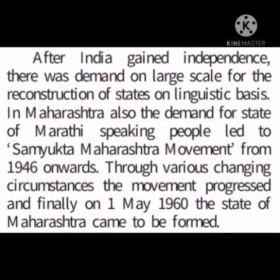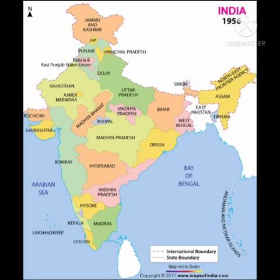We will study how this movement progressed and finally the state of Maharashtra came to be formed on 1st May 1960. See this map of India of 1956 — can you see Maharashtra state? No, because before 1st May 1960 there was no separate state for Marathi speaking people. In place of Gujarat and Maharashtra, you can see Bombay state — it was a bilingual state with majority of Gujarati and Marathi people.